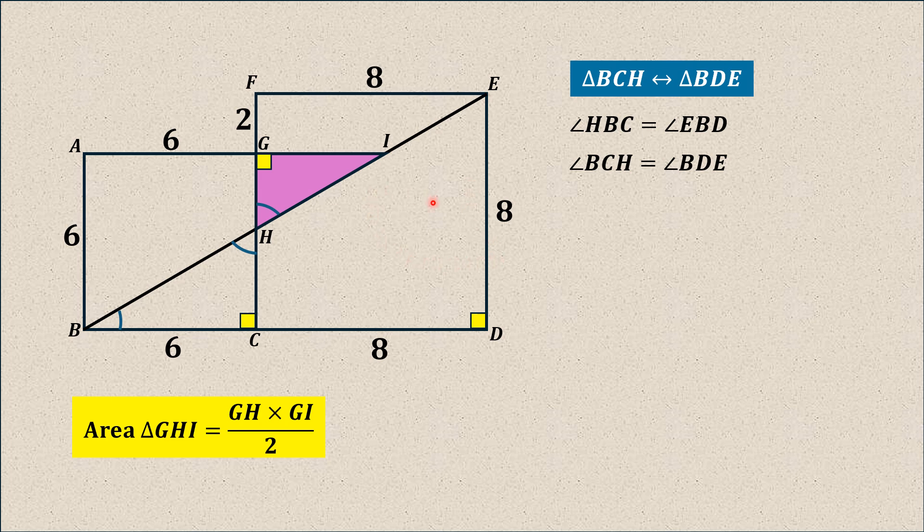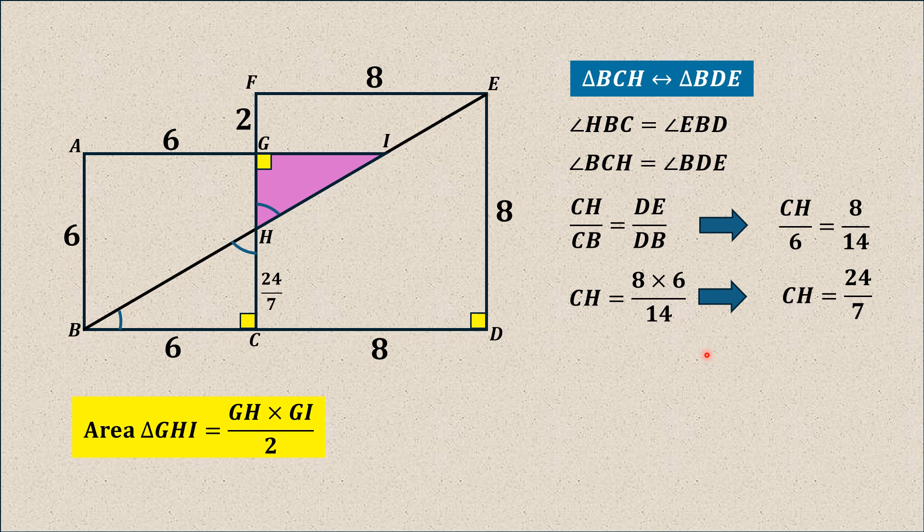If two triangles are similar, then ratio of their sides is equal. And from these two triangles, we have CH divided by BC, this is equal to ED divided by DB. So, substituting the values of CB, DE, and DB: CB is 6, DE is 8, and DB is 14 (8 plus 6 is 14). So, solving for CH, we have CH is equal to 8 multiplied by 6 divided by 14, which is equal to 24 by 7. Thus, this length is 24 by 7.